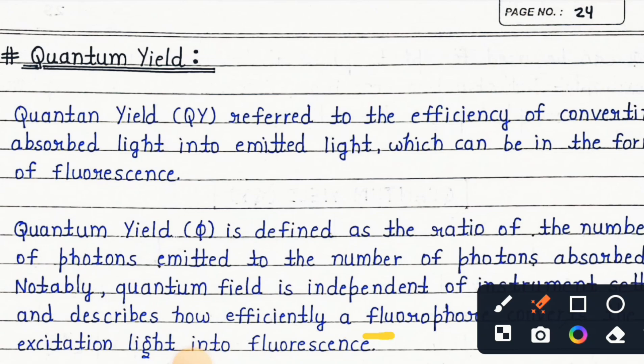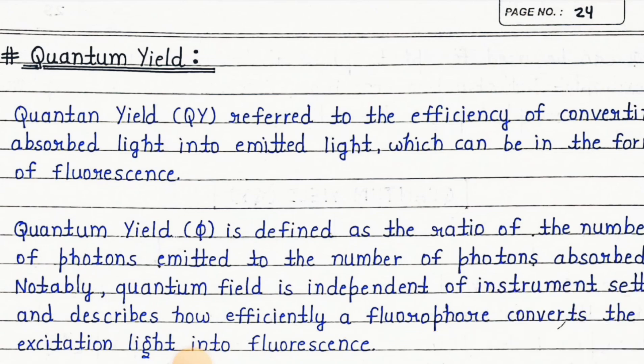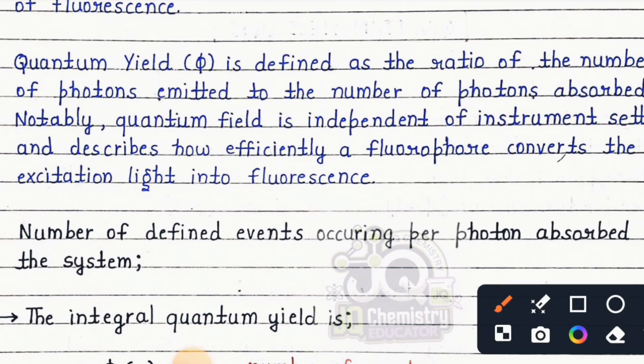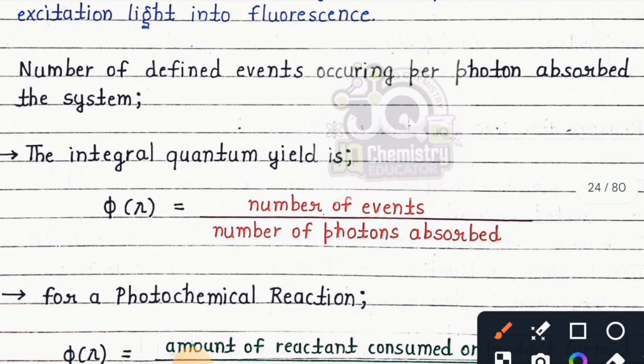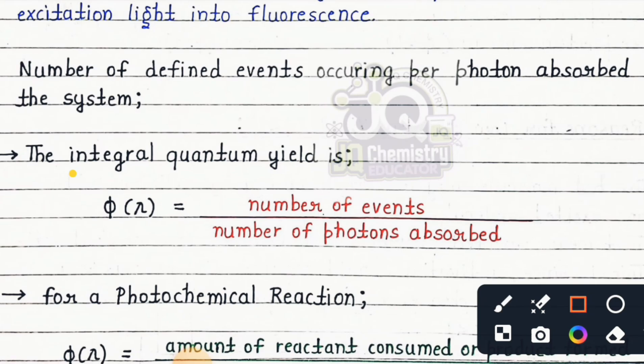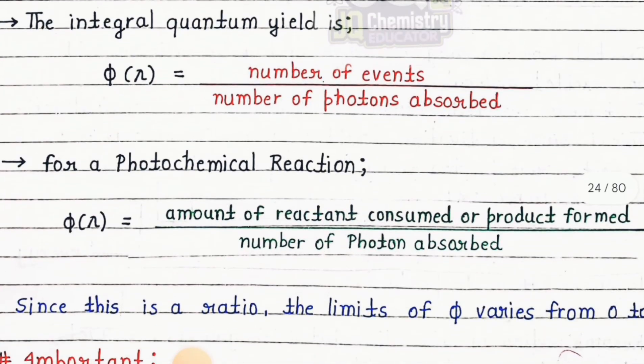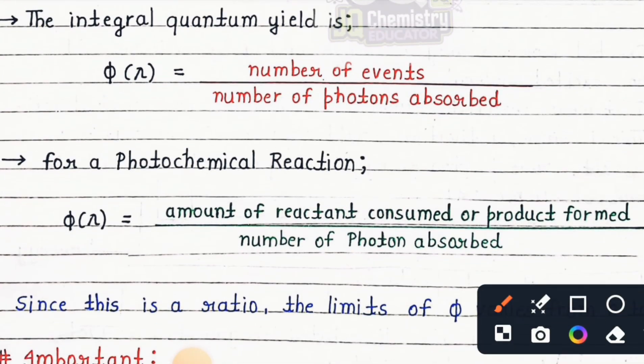effectively a fluorophore converts the excitation light into fluorescence. Number of defined events occurring per photon absorbed by the system - the integral quantum yield is the formula to find quantum yield: number of events upon number of photons absorbed for a photochemical reaction.